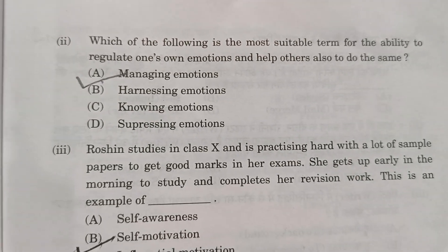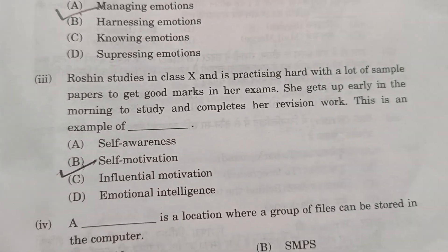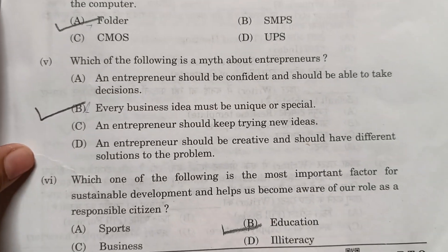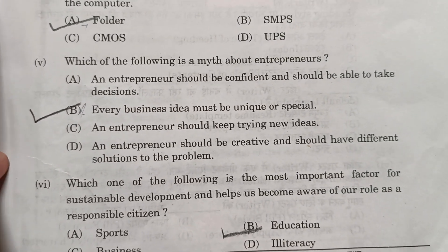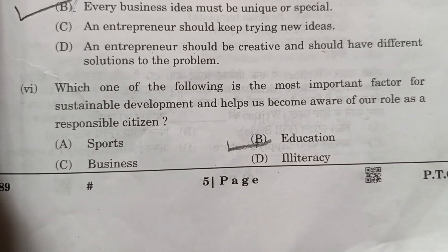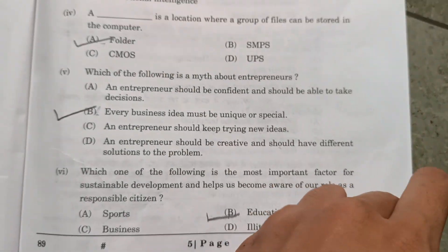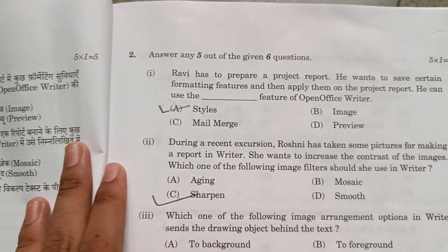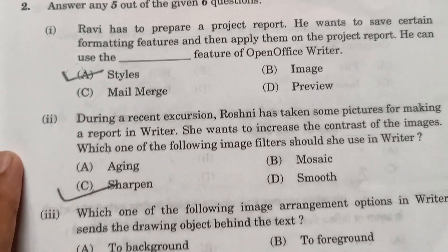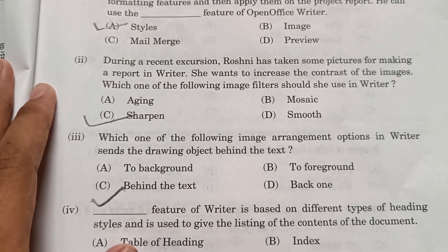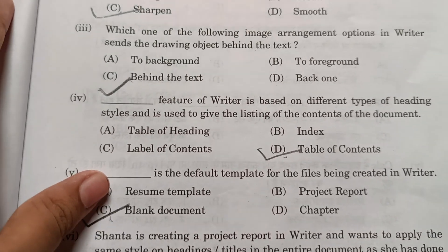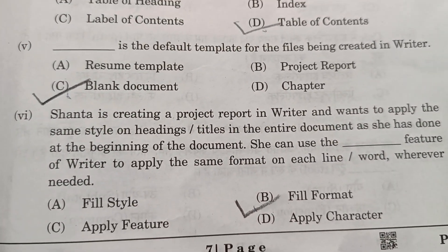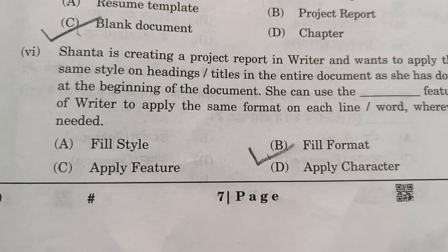Second answer is also A, third answer is B, fourth is A, fifth is B, sixth is B. Second question: first answer is A, second is C, third is also C, fourth is D, fifth is C, sixth is B.